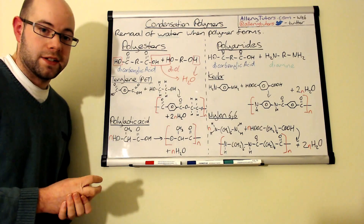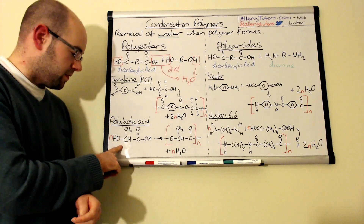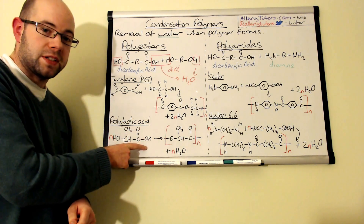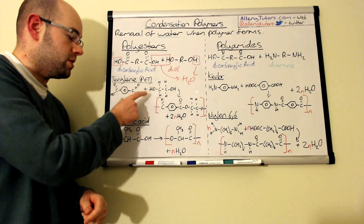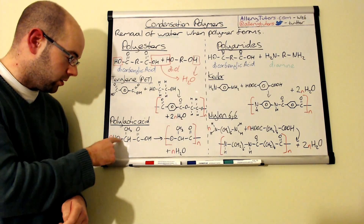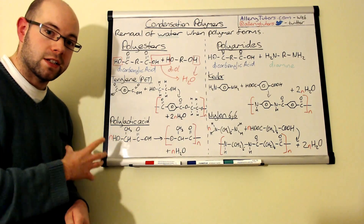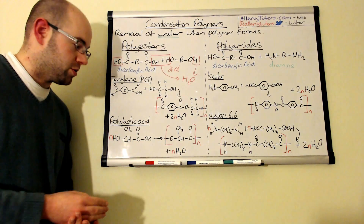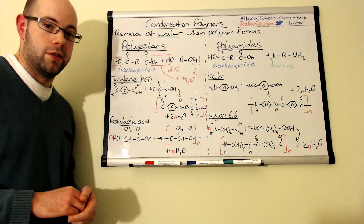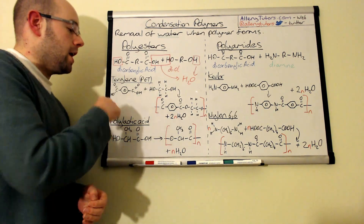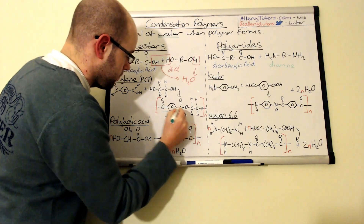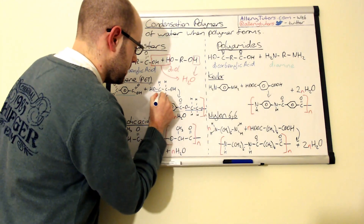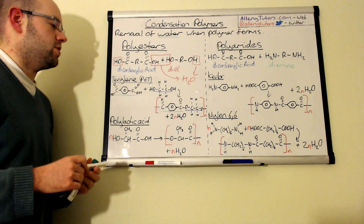The other polyester example is polylactic acid, made from 2-hydroxypropanoic acid, which is lactic acid. This is slightly different because it uses the same monomer repeated, rather than two different monomers. It still works as a polyester because there's an alcohol on one side and a carboxylic acid on the other. This joins together to form the repeat unit, but because there's only one carboxylic acid and one alcohol per monomer, only one molecule of water is formed per join rather than two. The carboxylic acid part and the alcohol part can be highlighted to show where each portion of the repeat unit originates.